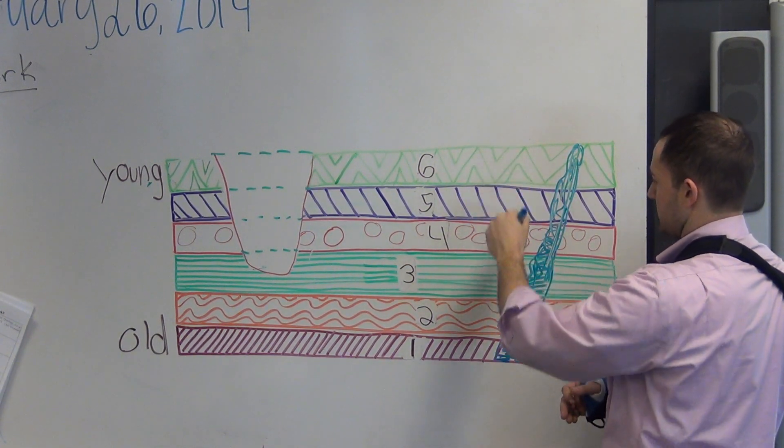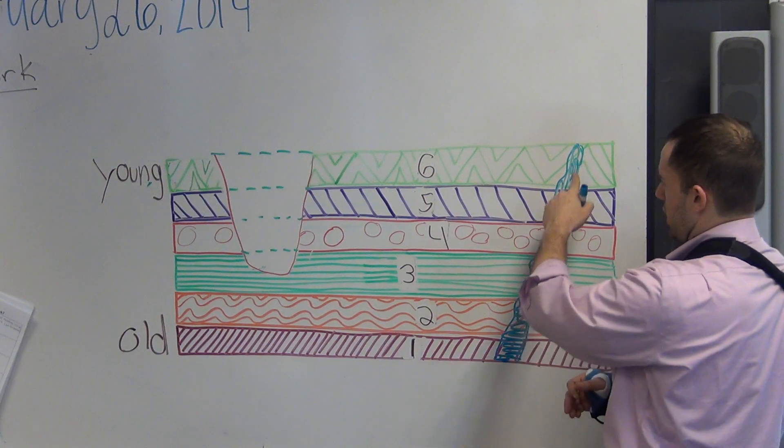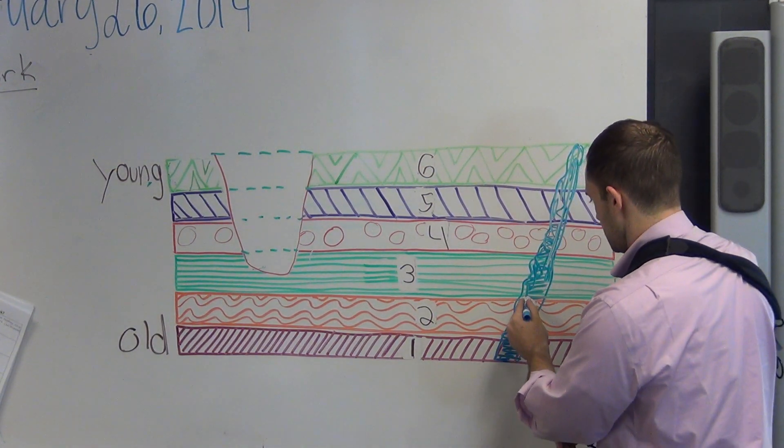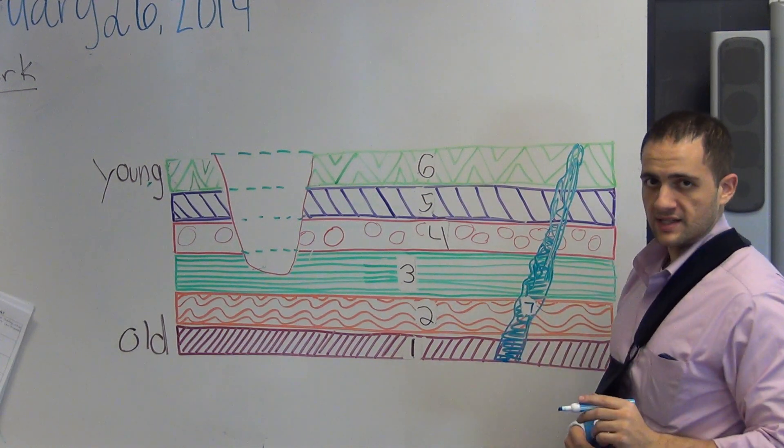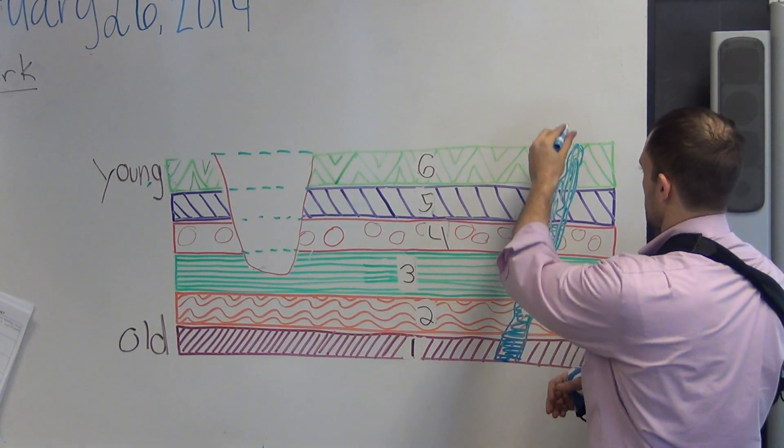So if we have our six layers and this goes all the way through all of them, we can say that this was the seventh thing to happen, and it's also the youngest.